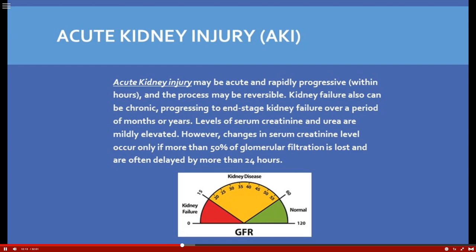Kidney failure can progress to a chronic stage, but the good news with acute kidney injury is it can be reversed. We watch serum creatinine and urea levels, which will be elevated. However, changes in serum creatinine occur only if more than 50 percent of glomerular filtration is lost, and this can be delayed — it can take up to 24 hours to appear in lab values.